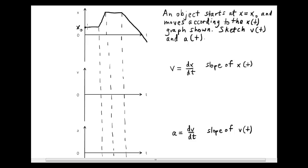Think about it for a moment. Velocity is the slope of the position versus time graph. What is the slope of the position versus time graph in the first region? It's zero. The slope equals zero, which means the velocity during this whole first period is also equal to zero. I'm not going to draw it all the way up to the dotted line, for reasons that will become apparent in just a minute.